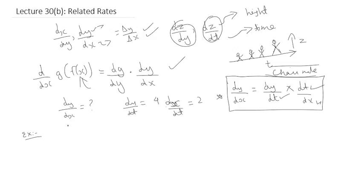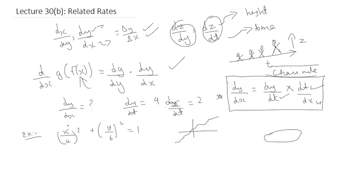Suppose a particle moves along the ellipse with equation (x/a)² + (y/b)² = 1. The particle's movement is modeled by this equation — for any position x, y of the particle. The ellipse is a curve like this. The particle moves along this boundary, and only along this, according to values a and b. That movement is defined by this equation.